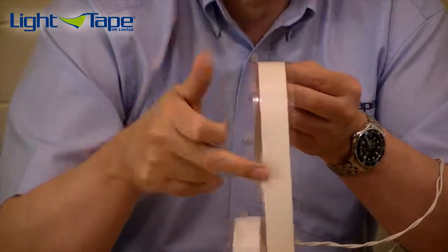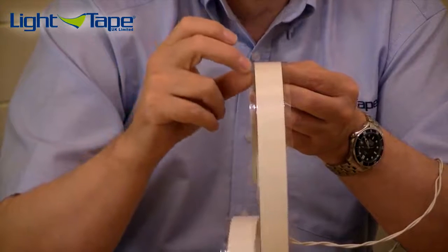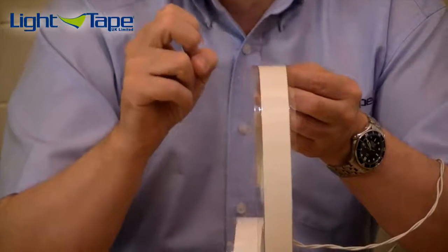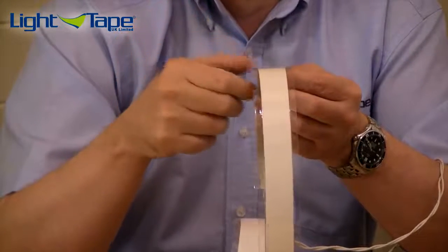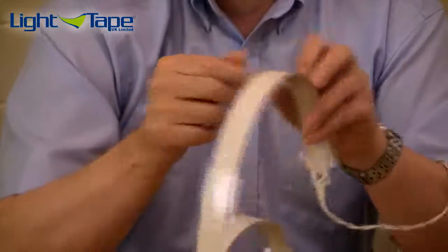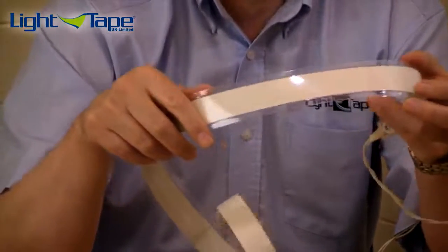This is a Honeywell encapsulation. We've actually encapsulated it by about a quarter inch either side of the light tape, which gives it some protection and gives the product some rigidity.